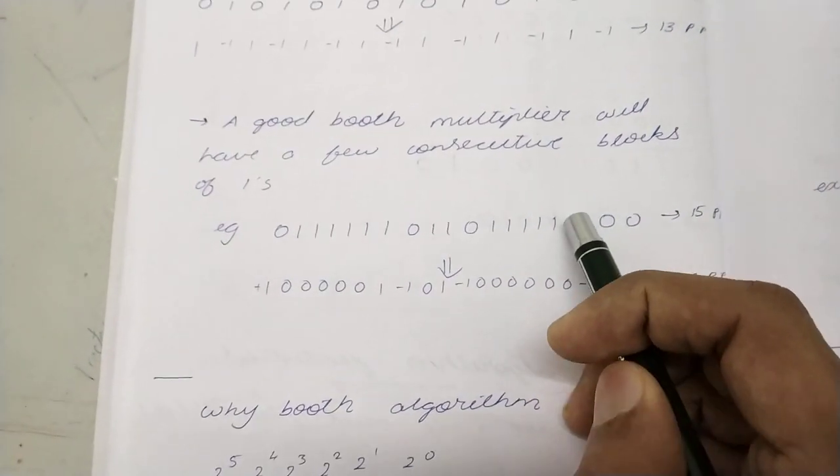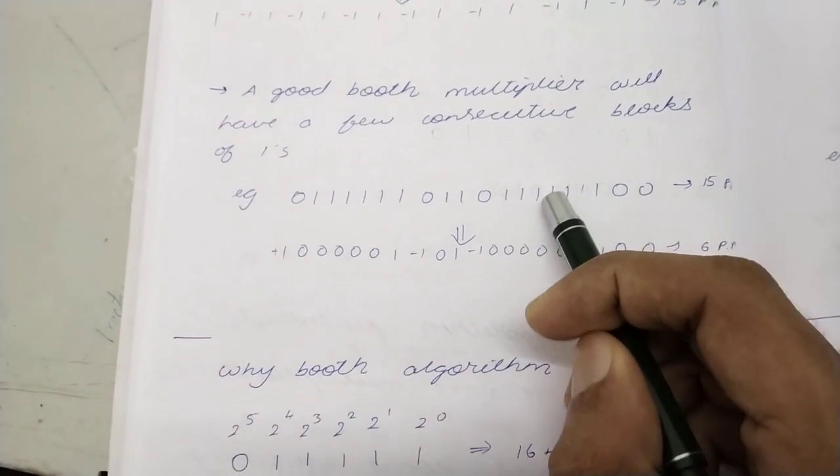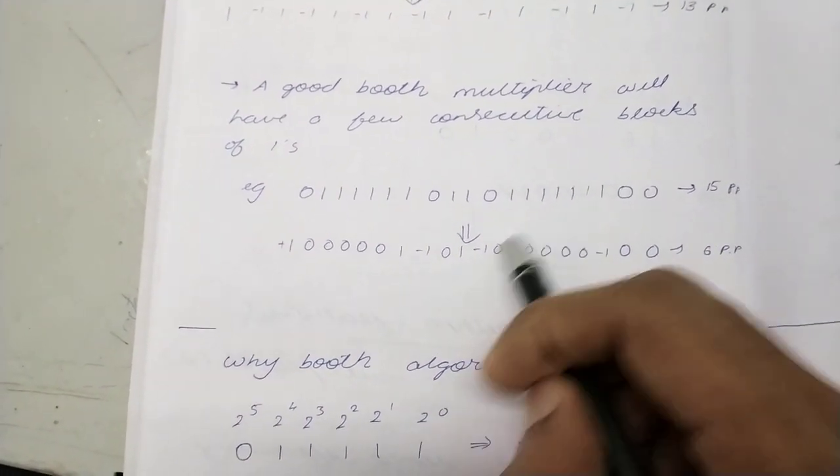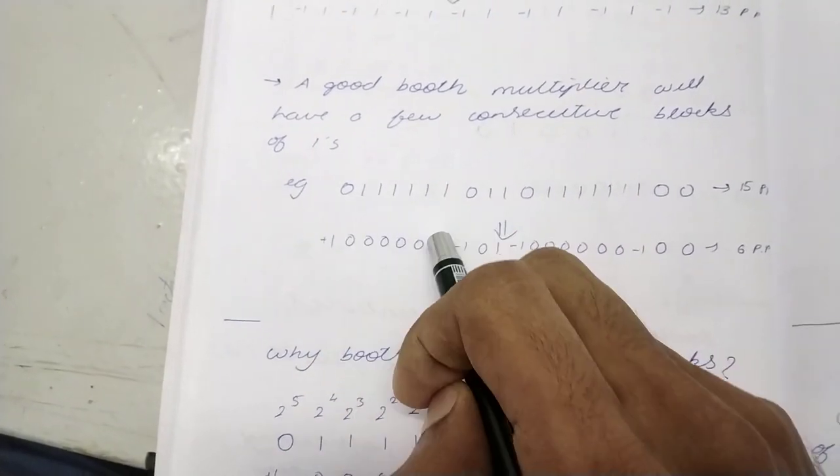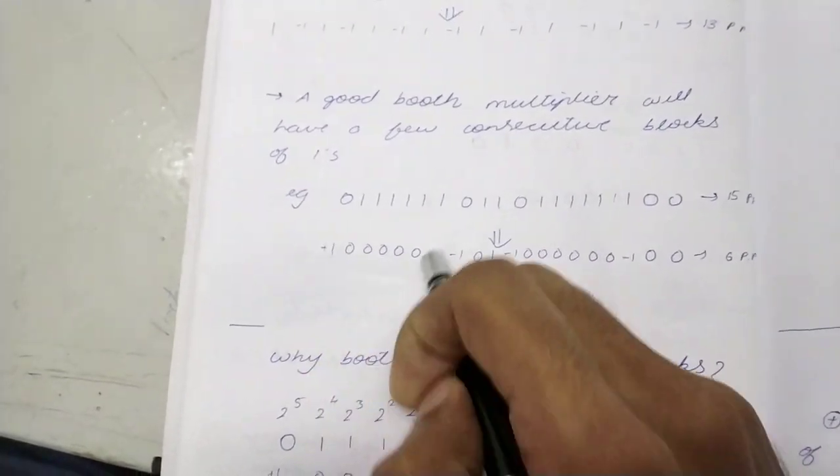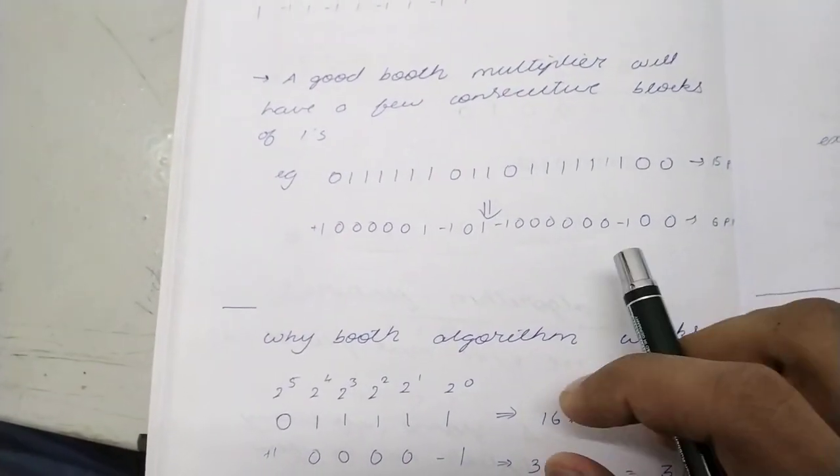What happens when there are consecutive blocks of 1? These 1 minus 1 is 0, 1 minus 1 is 0, 1 minus 1 is 0. All these consecutive 1's will create zeros. See? Consecutive 1's create zeros.